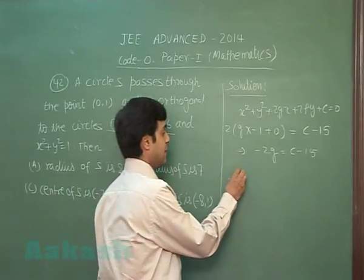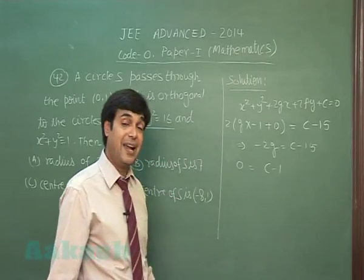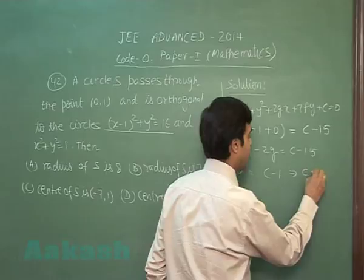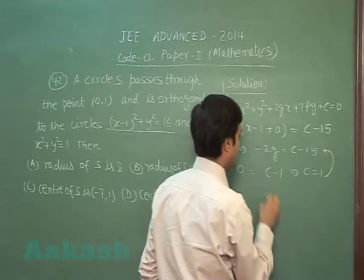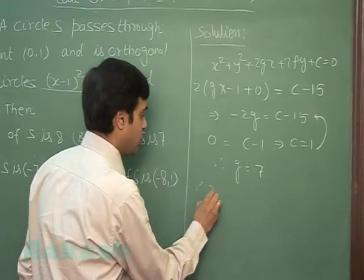It is orthogonal to the second circle means 0 = c - 1 because g and f are 0 in the second circle. This gives me c = 1. Put it back to get g = 7, so the circle changes to this form.